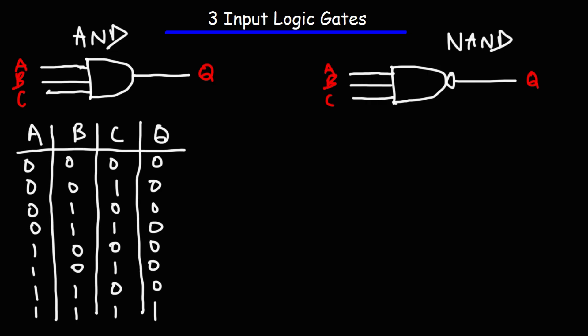The formula that corresponds to the NAND gate is Q equals the complement of the product of A, B, and C.